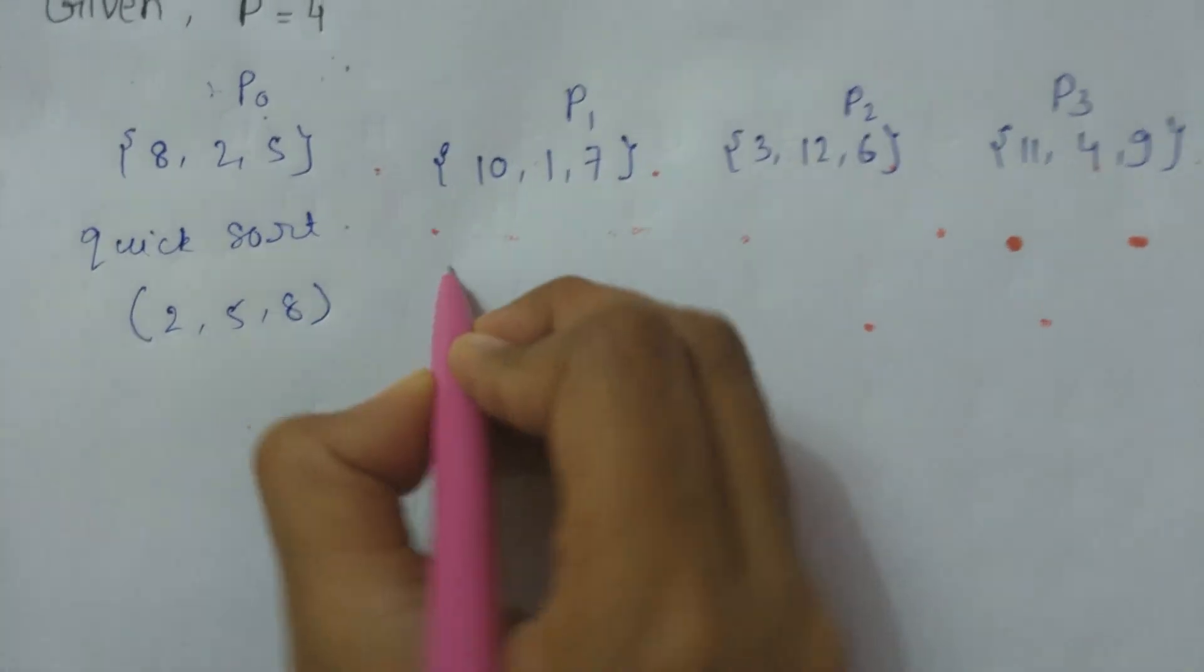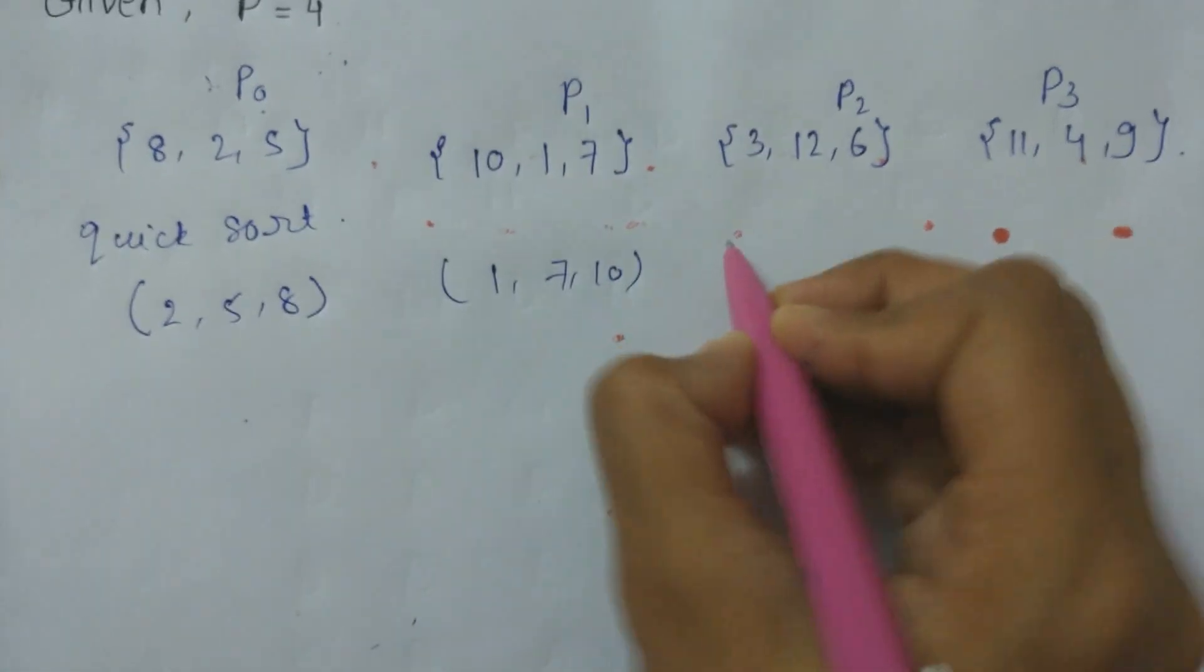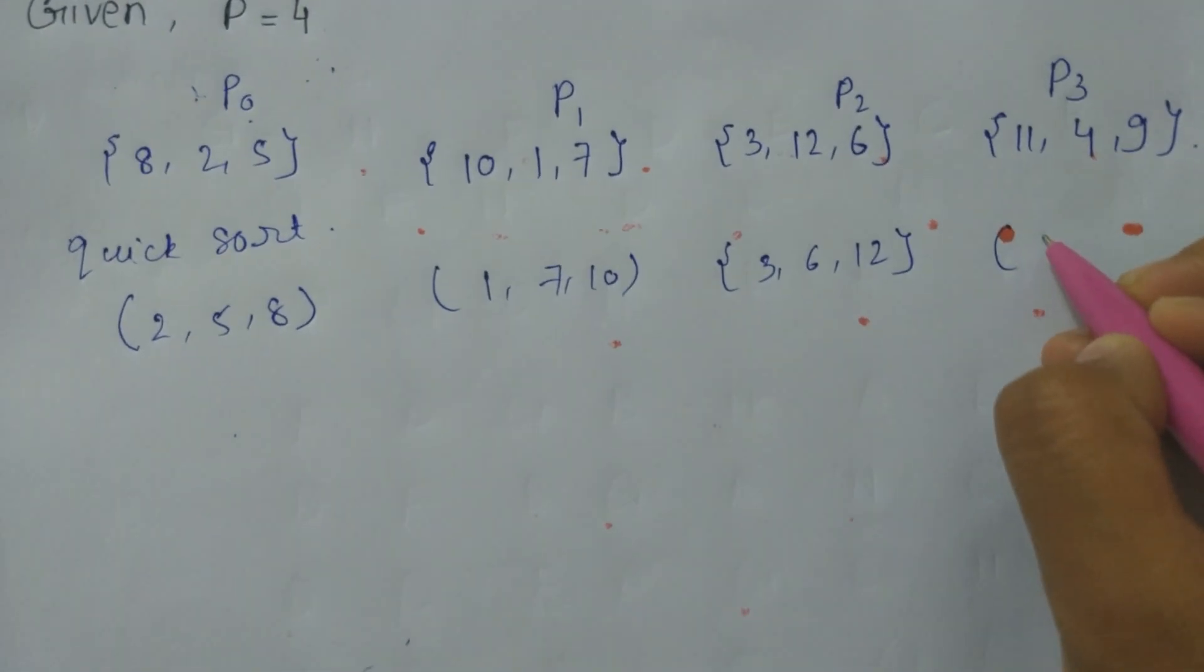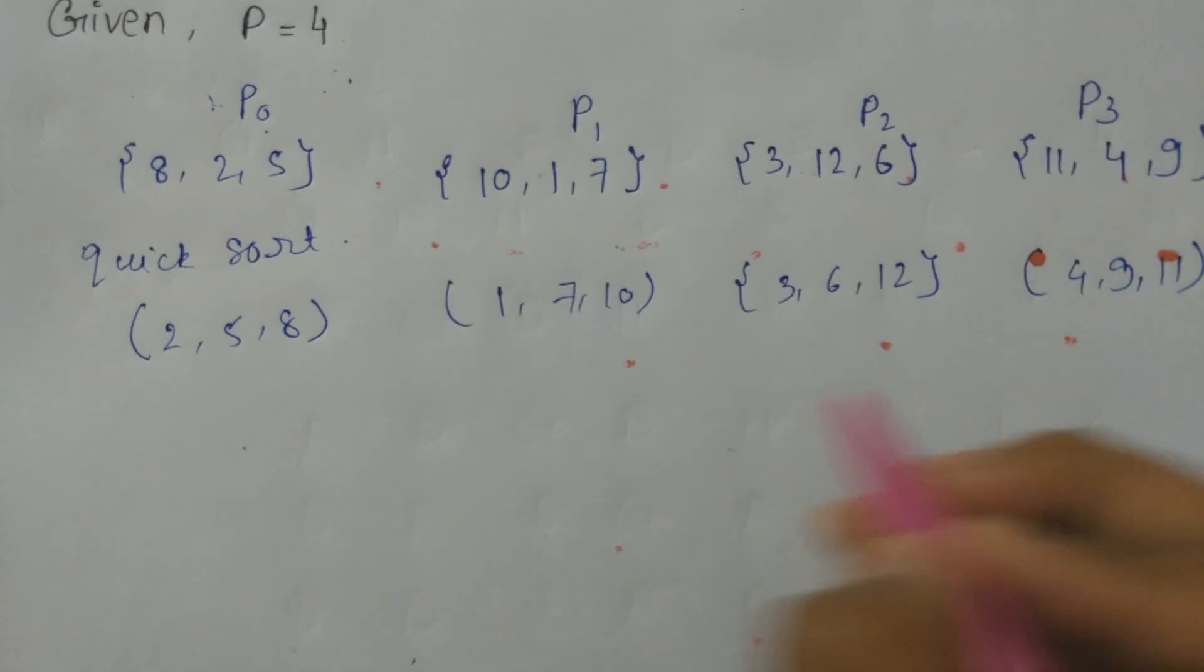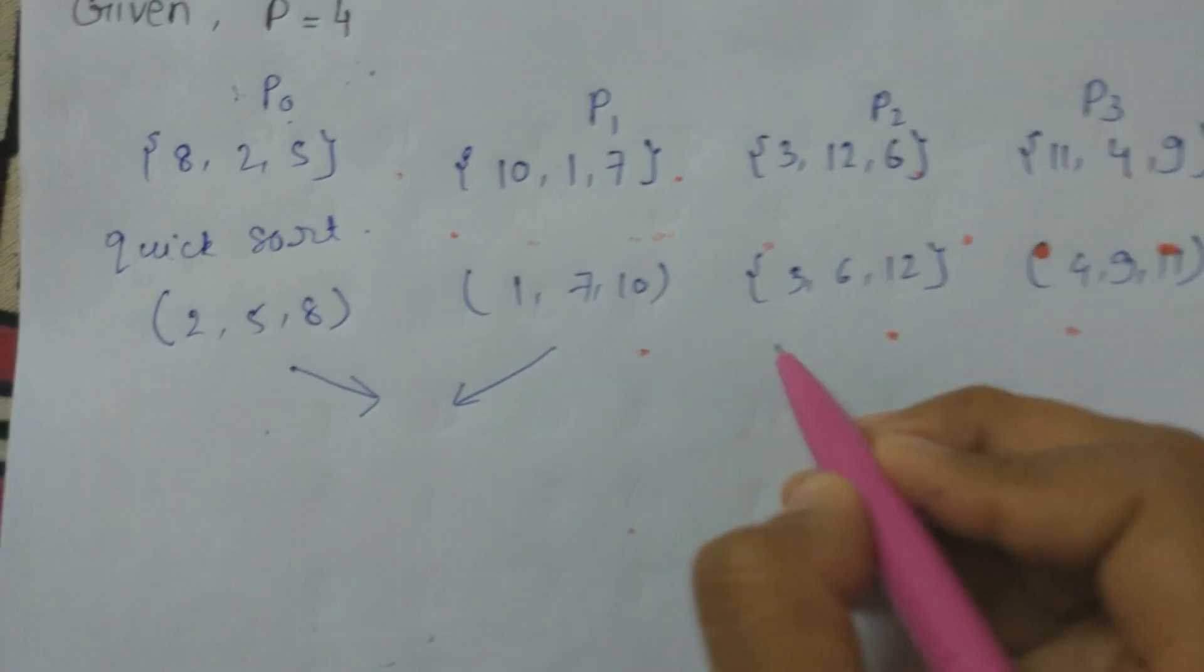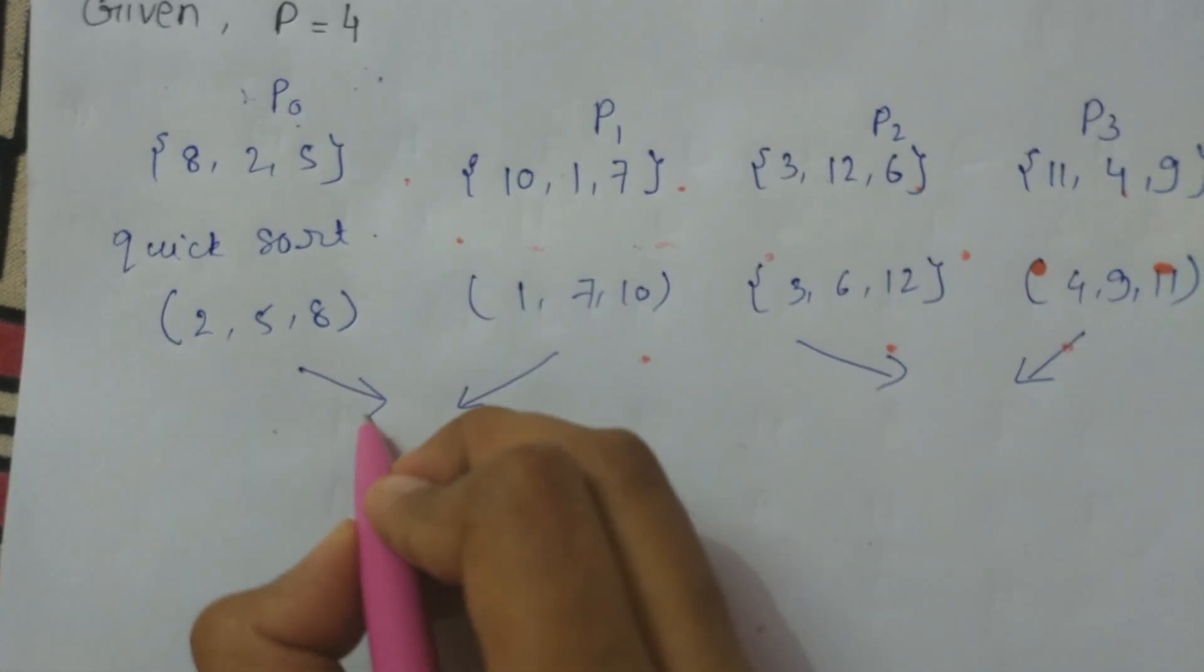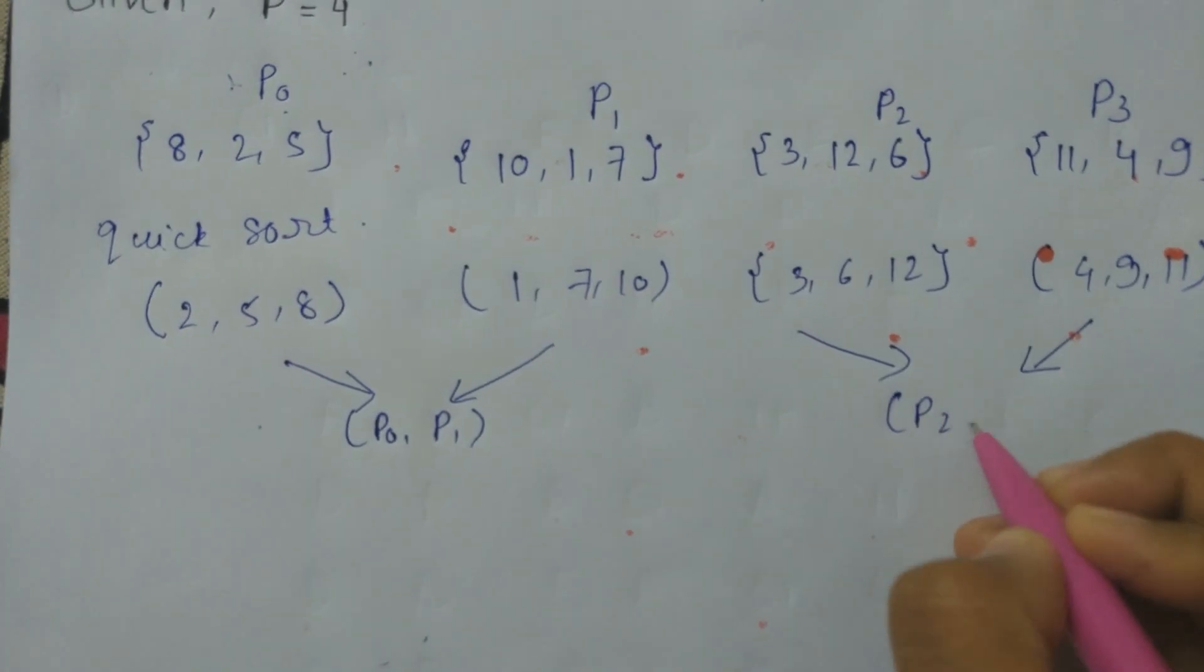Again 10, 1, 7 becomes 1, 7, 10; then 3, 6, 12; and 4, 9, 11. Now we will take this partition and merge it, and this partition and merge it - that is, we will merge P0 with P1 and P2 with P3.